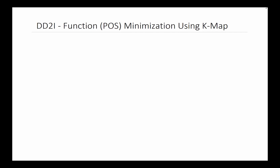Welcome to another video in the digital logic series. This one covers minimizing functions and reducing them to a product of sum form. We can receive problems in many forms: word statements, truth tables, sum of products, or product of sums. Here, somebody gave us a function with four input variables a, b, c, and d as a sum of products and asked us to minimize it in product of sum form. When given a sum of products, it tells us where the ones are.